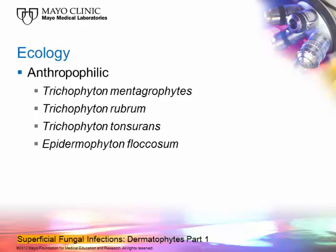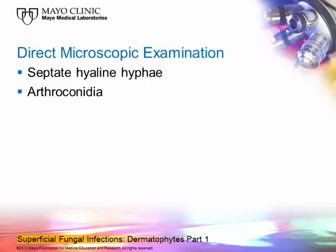In the clinical laboratory, one of the first things requested — often done in the dermatologist's own office — is direct microscopic examination of skin, nail, or hair. You may find septate hyaline hyphae with no pigment, or hyphae breaking down into arthroconidia, those rectangular spores. This doesn't confirm a dermatophyte species, but strongly suggests one when the specimen is from hair, skin, or nails.